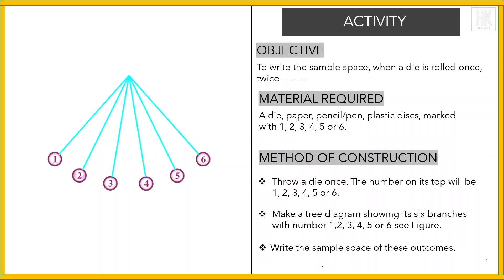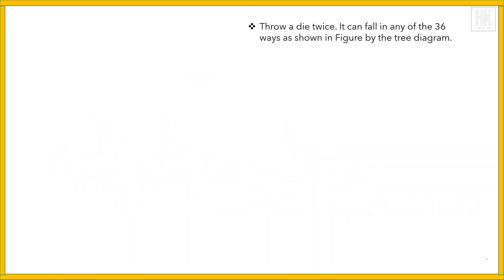Here is the sample space. If we write our six branches: 1, 2, 3, 4, 5, and 6. If a dice is thrown twice, it can fall in any of the 36 ways as shown by the tree diagram.